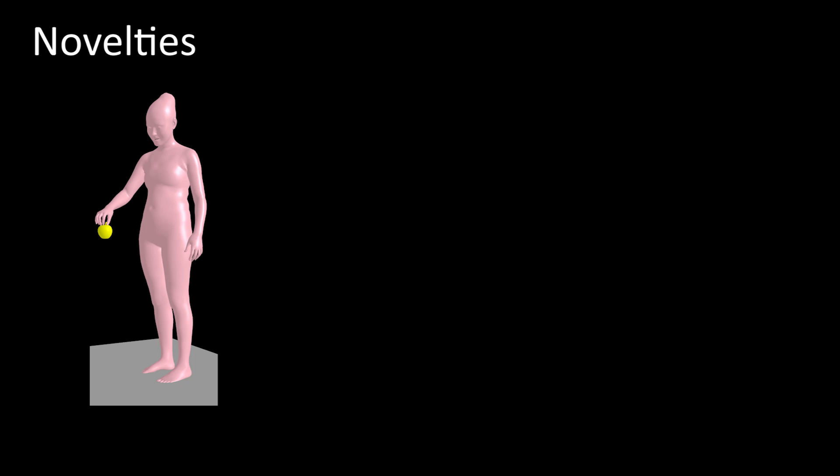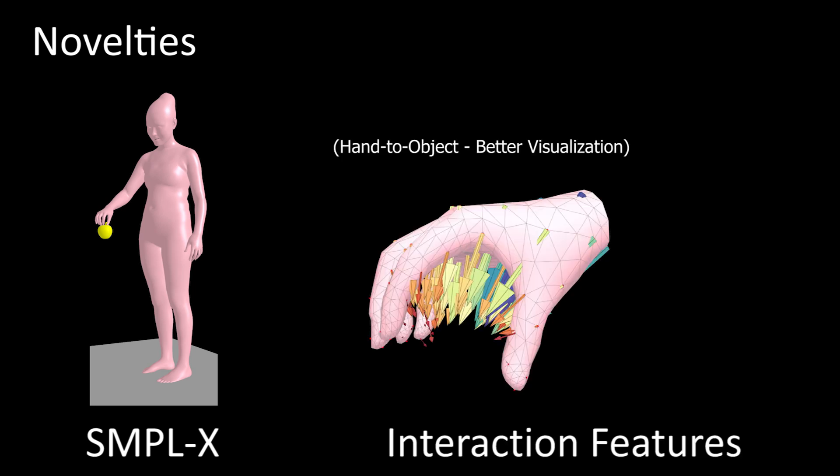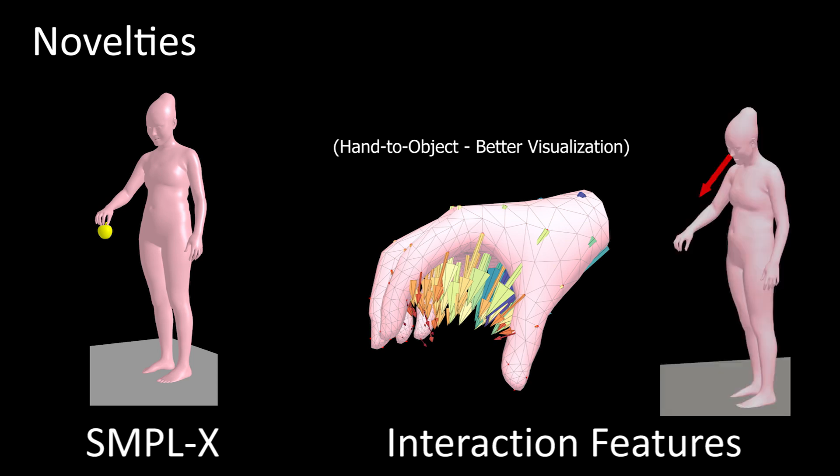Our first novelty is that our networks jointly infer both the parameters of the SMPL-X body model and interaction features, namely 3D body-to-object offsets and a head direction vector. We exploit these inferred SMPL-X parameters to refine them in a post-processing optimization process.